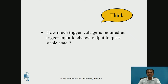How much trigger voltage is required at trigger input to change the output of monostable multivibrator to quasi-stable state? A trigger voltage of less than one-third VCC is required at pin number 2 so as to switch the internal lower comparator 2 to high, and thereby the output of IC555 changes from stable state to quasi-stable state — it becomes high voltage level.